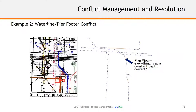Another situation on Grand Avenue Bridge was a conflict with a new waterline shown in blue. Using the cursor to demonstrate: this black dashed line is the footer for a new bridge column pier location for the new traffic bridge. The waterline cut through this corner, and when we laid the waterline in, our construction manager on site recognized from the plan that a future footer was going in.